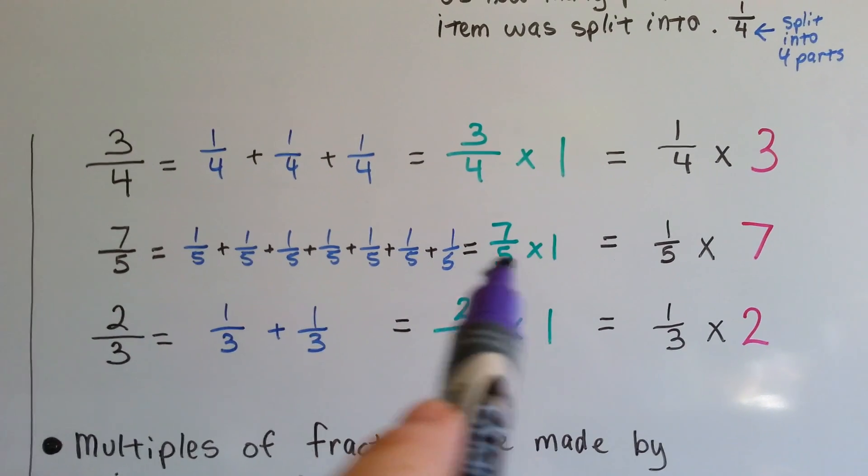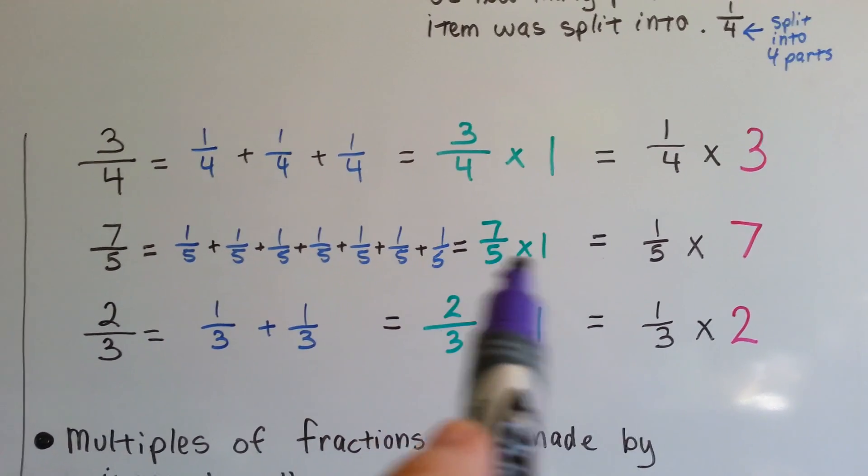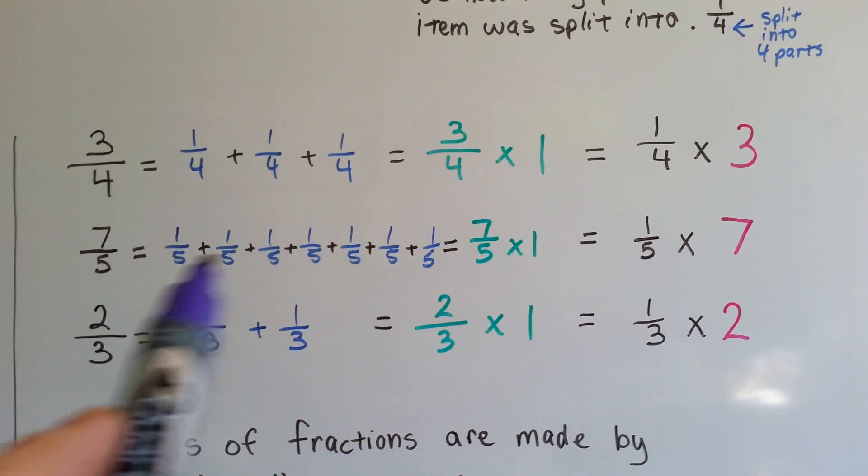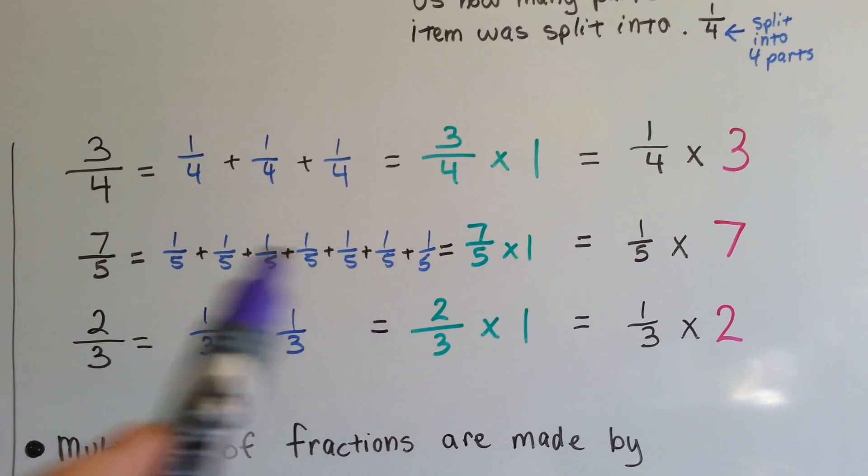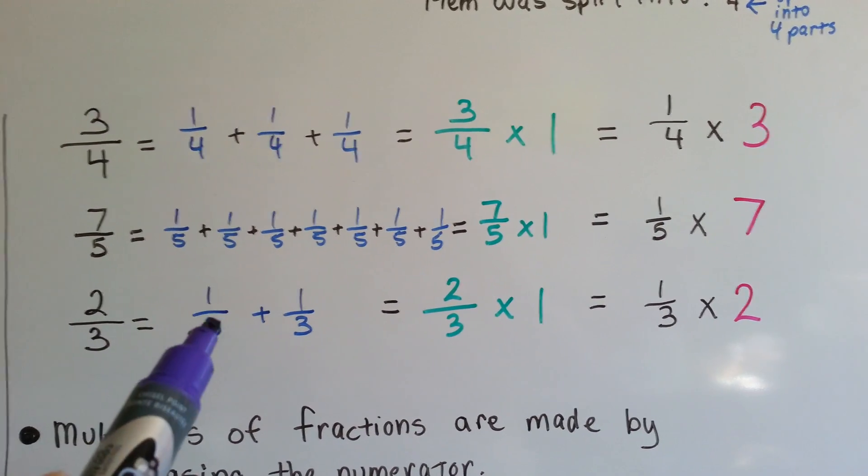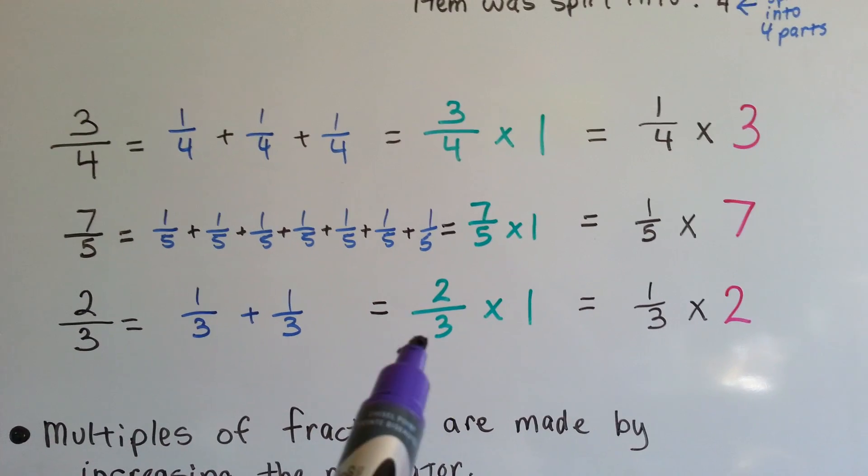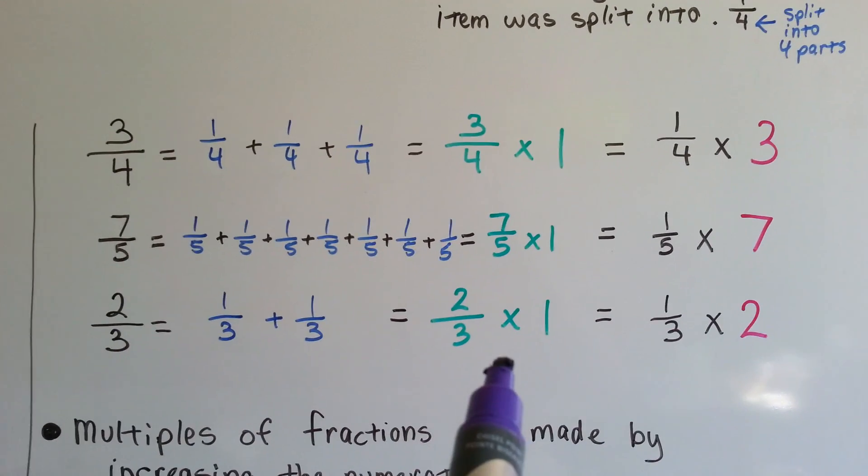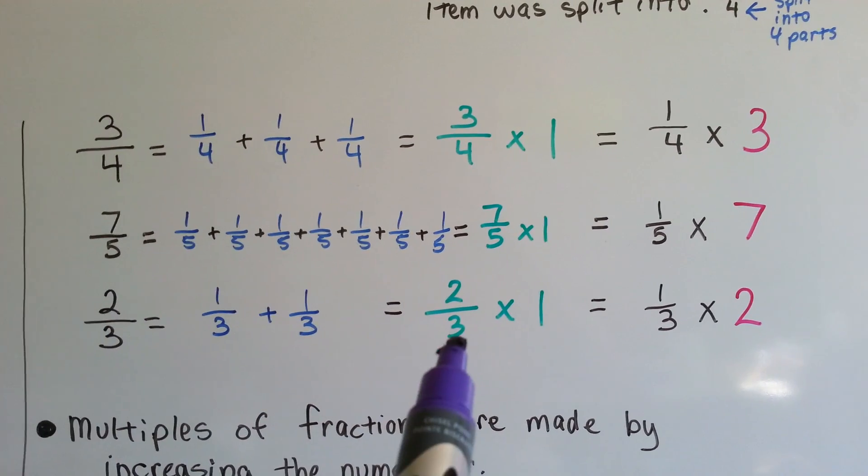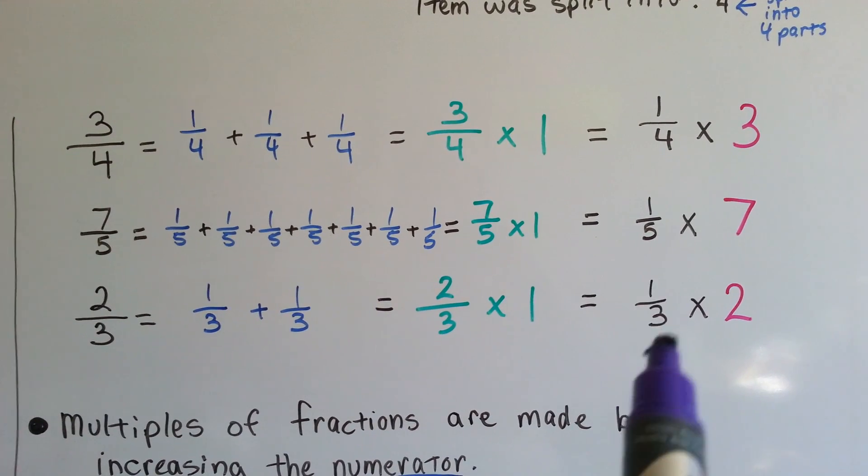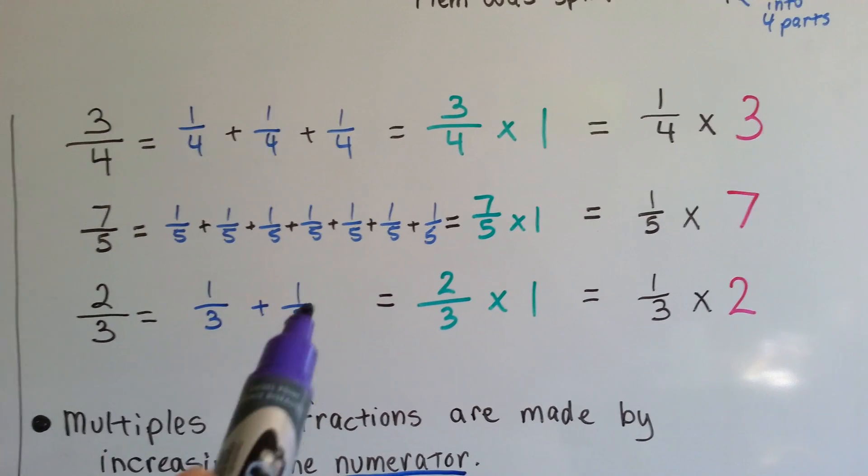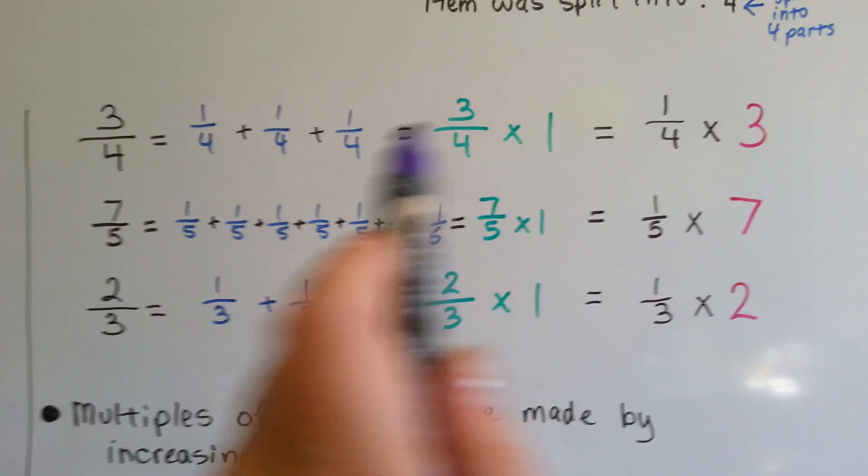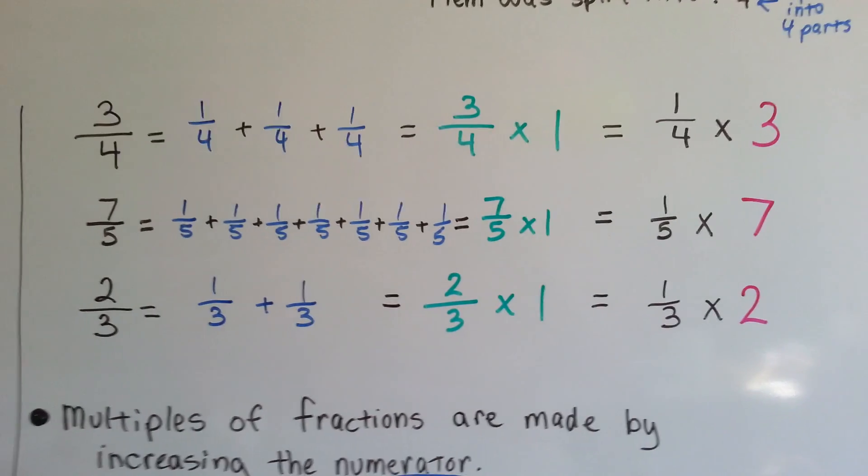It stays its name. It keeps its name. Its identity. Or we could show it as 1 fifth times 7. We have 1 fifth times 7, 7 times. 2 thirds can be 1 third plus 1 third. It can be shown as 2 thirds times 1. Identity property again. It kept its identity as 2 thirds. And it can also be shown as 1 third times 2. 1 third 2 times. So these are all the different ways that it can be represented.